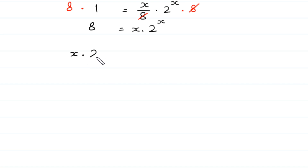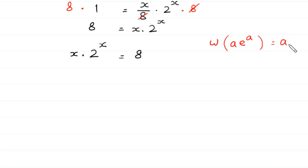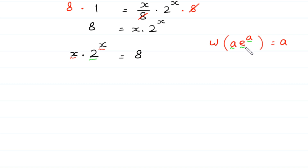Now, we want to use the Lambert W function, where W(a · e^a) = a. To use the Lambert W function, we must have the same expression in both places — here we have x and here we have x. But we must have e in place of the base 2. To bring e in, we use the natural log property: e^(ln a) = a.